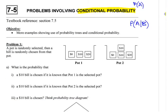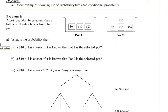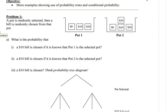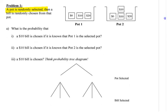So we're going to do problems involving this. Look at this first situation: there are two different pots that have bills in them. A pot is randomly selected, and then a bill is randomly chosen from that pot. If it says a pot is randomly selected, what's the chance of each one? It's a one-in-two chance — 50%. For conditional probability problems, it's helpful to make a tree diagram.